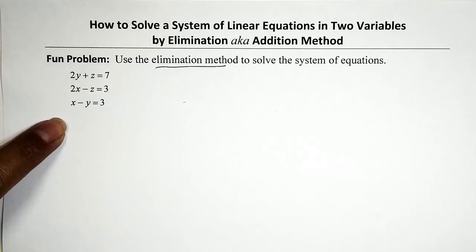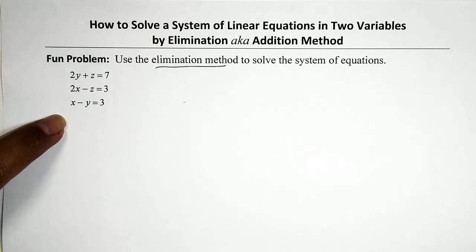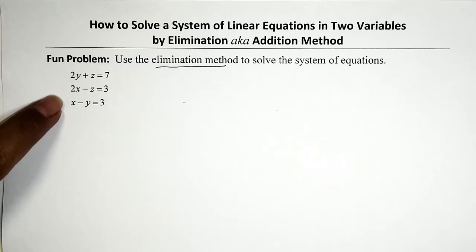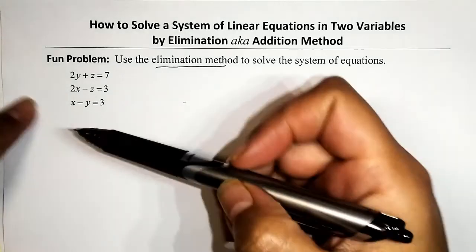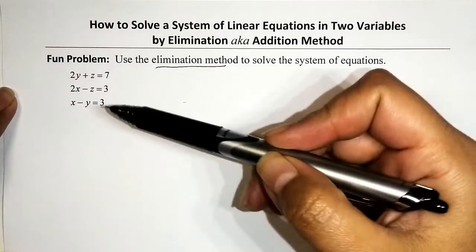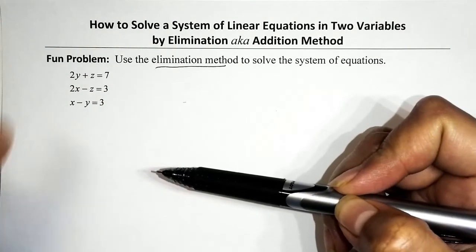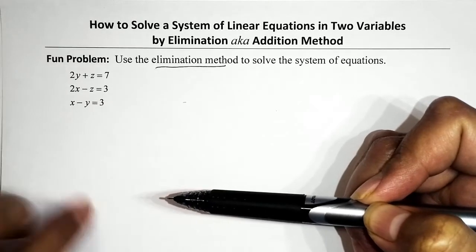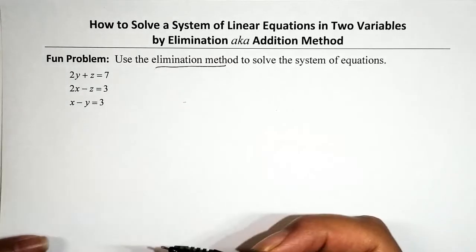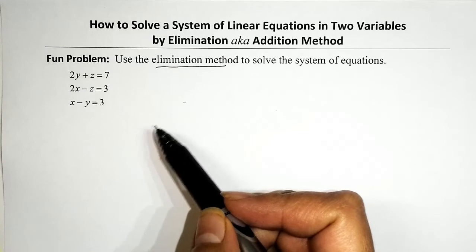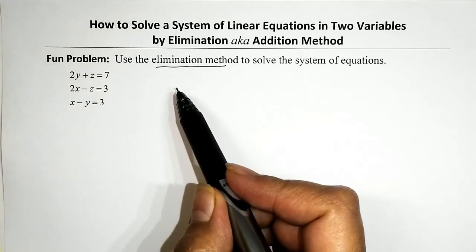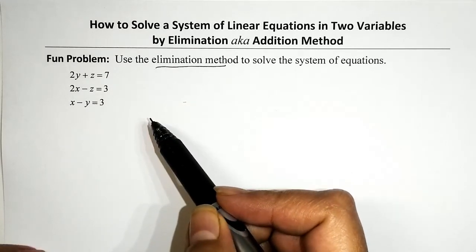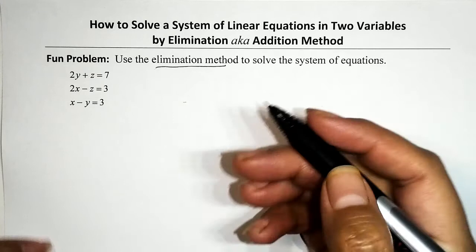As you can see, neither one of these equations has all three variables. Also, the variables are not lined up — we don't have an X column, a Y column, and a Z column — and that's really messing with my flow. So with your permission, let's go ahead and rewrite it. When we solve a system of equations by elimination, whether we have a system in two variables or in this case three variables...